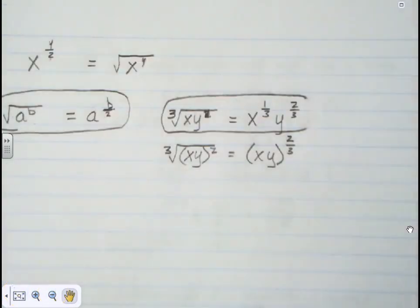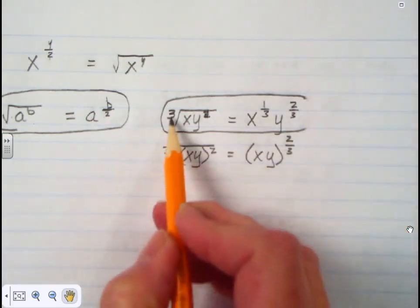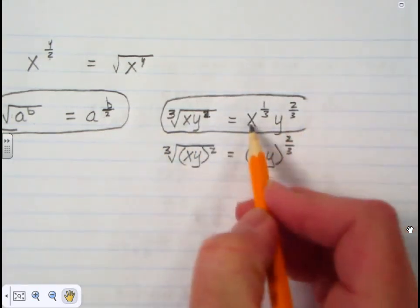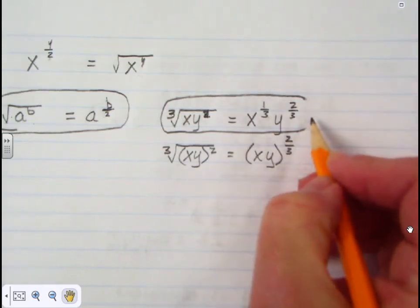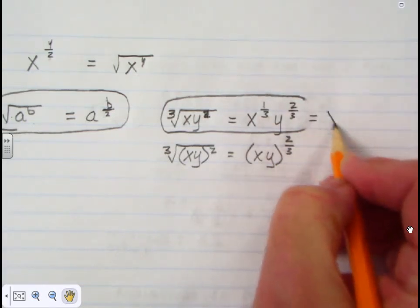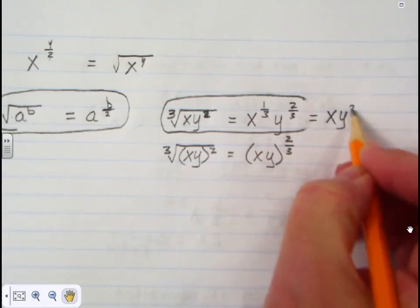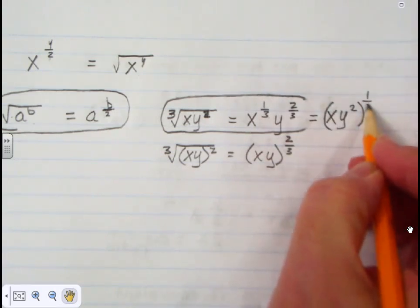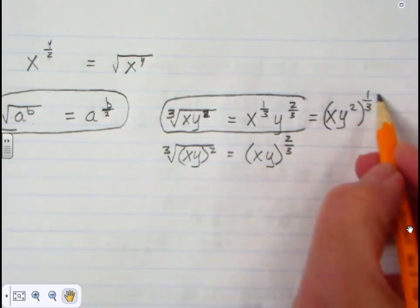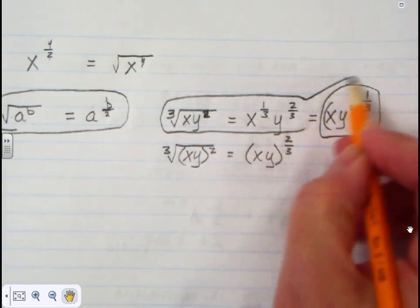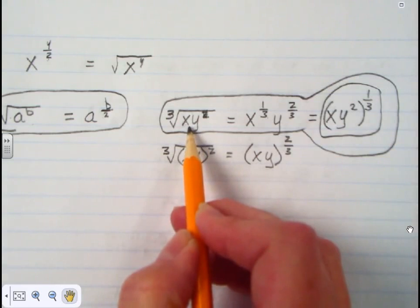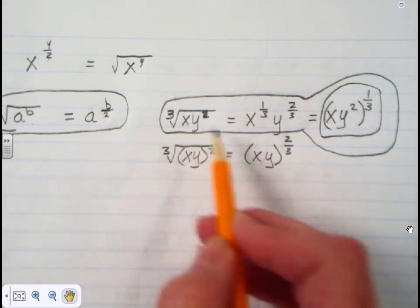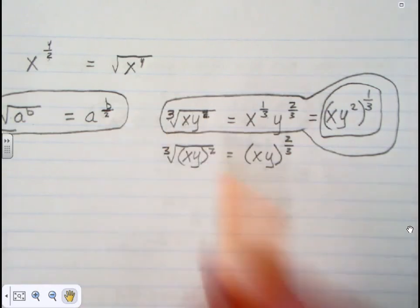Let's pause here. In this particular problem — the cubed root of x times y squared — not only could your answer be x to the one-third times y to the two-thirds, but more often you will see the answer expressed as (xy²) all to the one-third power. Everything that's under the radical, also known as the radicand, is raised to the one-third power to show the cubed root.